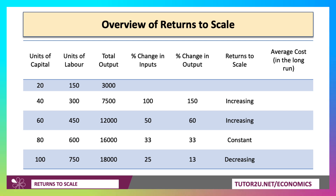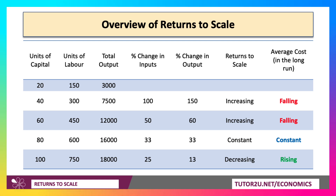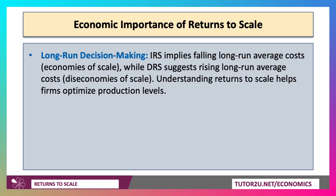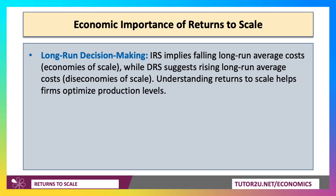When returns to scale are increasing, average cost will be falling. When you have constant returns to scale, average cost will remain the same. And when returns to scale are decreasing, average cost will be going up. Increasing returns to scale implies falling long-run average costs — and obviously, that's an economy of scale.